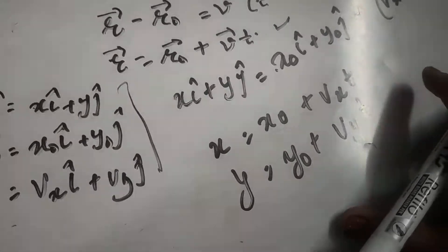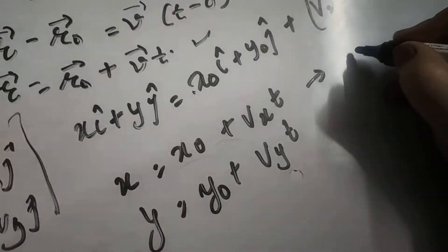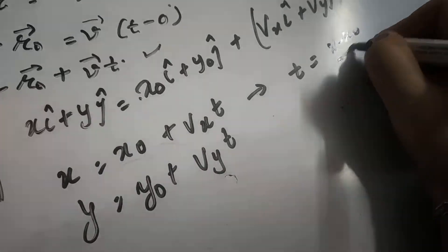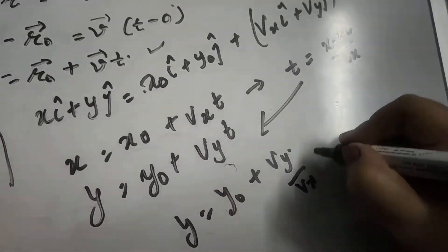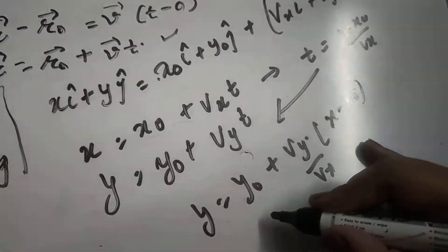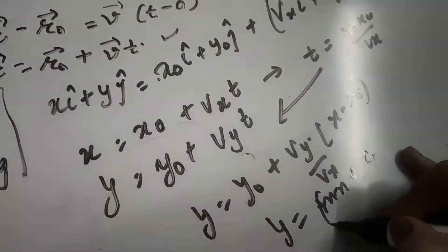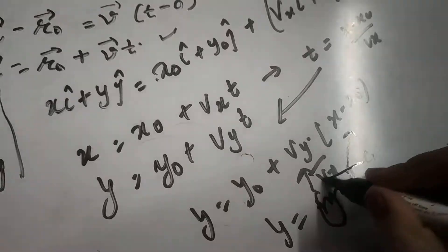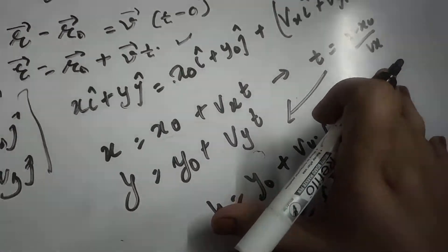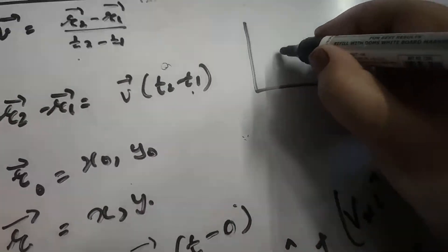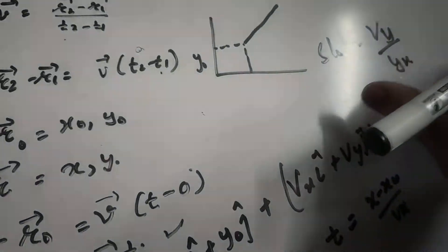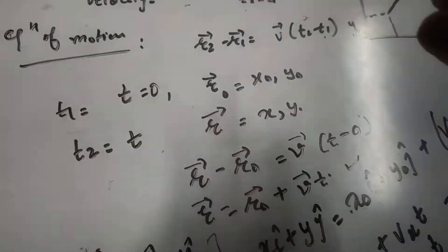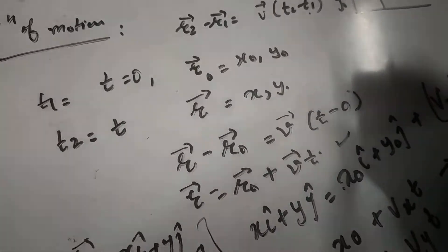Now let us find out the equation of path. From the x-equation we can find time T, which comes out to be (x minus x-naught) divided by Vx. Substituting T into the y-equation, we get Y equals y-naught plus (Vy/Vx) times (x minus x-naught). This represents Y equals mx plus c, where m is the slope equal to Vy/Vx and c is the intercept. So the equation of path is a straight line with slope equal to Vy by Vx and intercept equal to y-naught. This means that if a body is moving with uniform velocity in a plane, its equation of path will be a straight line.